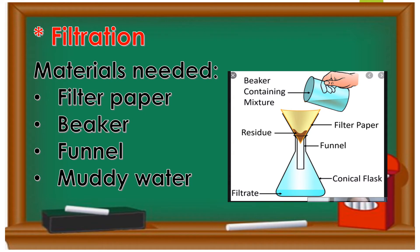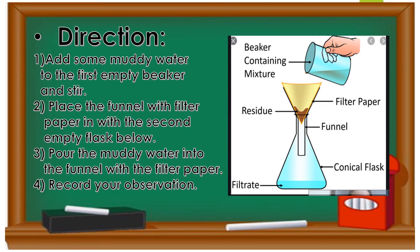For the filtration process, these are the materials you will need: filter paper, a beaker (or conical flask), a funnel, and muddy water. These are the step-by-step directions for filtering muddy water.